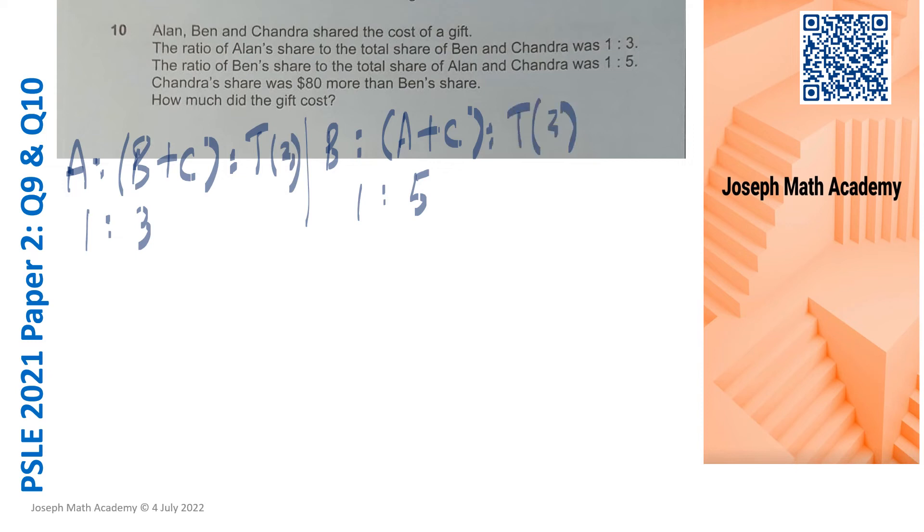So I can put a total of the three boys here. Introduce another component to the ratio, total of the three boys, because the gift, the cost of the gift shared by three boys. If I take Allen's share plus Ben's plus Chandra, this is 4. This is 6. Strangely, the total must be the same. It is repeated identity concept. Since the total for the two ratios must be the same, I'll get a common 12 here. So it's a P4 concept of common multiple. I times 2 here, I times 3 here. This is 2, this is 8. This is my 3, this is my 9.